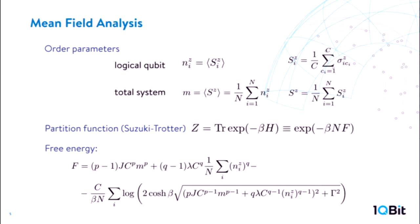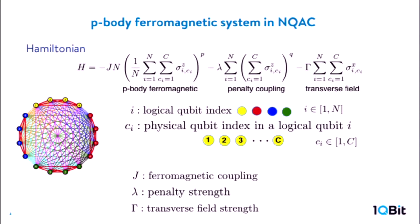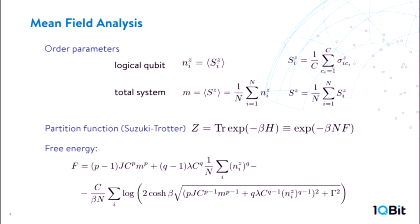Since we want to understand the phase transition structure of this nested annealing, we use a mean-field analysis. Nested QAC is an all-to-all interaction, so mean-field analysis gives a very precise result. To do this mean-field analysis, we first have to choose the order parameters. In this case we have an extensive number of order parameters. The first is the expectation value of each logical qubit, and the second is the total magnetization. Using these order parameters, we compute the partition function using the Suzuki-Trotter method to obtain the free energy.